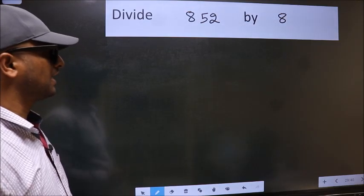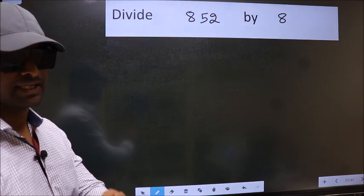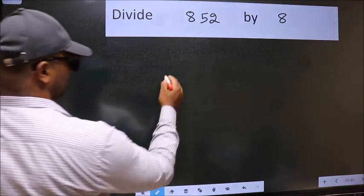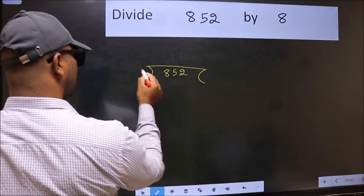Divide 852 by 8. To do this division, we should frame it in this way: 852 here and 8 here.